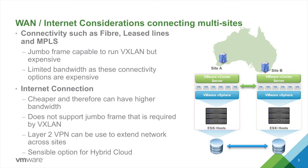Whereas for internet you could have higher bandwidth because it's much cheaper. However, internet does not support jumbo frames, so if you are thinking of using VXLAN over an internet connection, basically you are out of luck. What you can do is use a layer 2 VPN if you still want to extend the network across sites. This is extremely sensible for hybrid cloud, because the available connections at the public cloud end are usually internet.